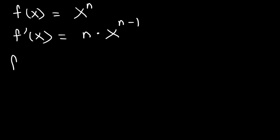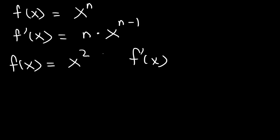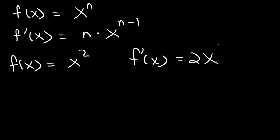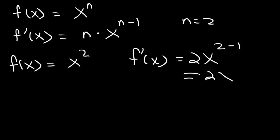For example, if f of x is equal to x squared, then the first derivative — we take this constant and move it to the front — so it's going to be 2 times x raised to the 2 minus 1. In this example n is 2, so 2 minus 1 is 1, and we get 2 times x to the first power, or simply 2x.